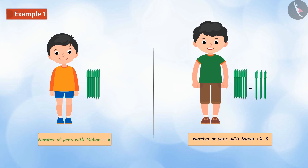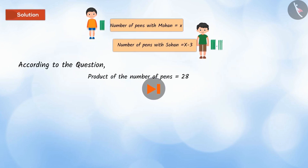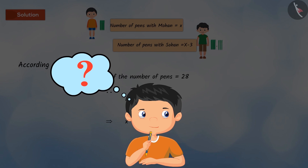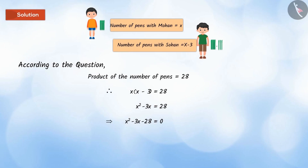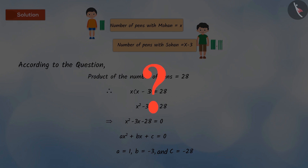The number of pens with Sohan is 3 less than the number of pens with Mohan, and the product of the number of pens is 28. Is this possible? Pause the video and write the quadratic equation for this situation, then match it with the video. We have to compare this equation with the standard form of the quadratic equation, which gives us the values of a, b, and c. Now, we have to find out the nature of the roots to check the possibility of the situation given in the question.